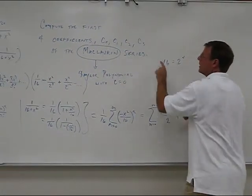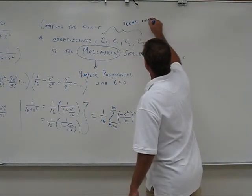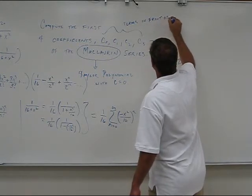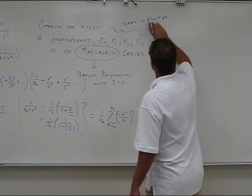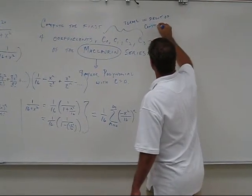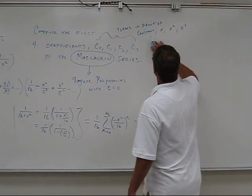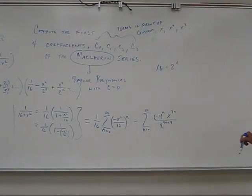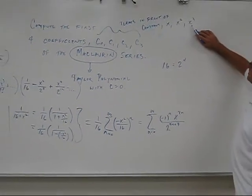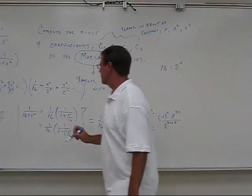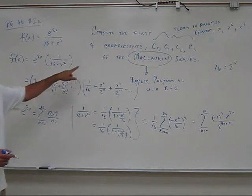What are these coefficients that I'm looking for? These are the terms in front of the constant, x, x squared, and x cubed. So, I really only need to go up to x cubed to find out what these coefficients are. So, in order to see this, what we're going to do is we're going to multiply this out.